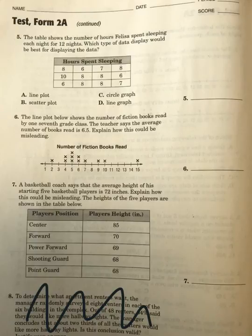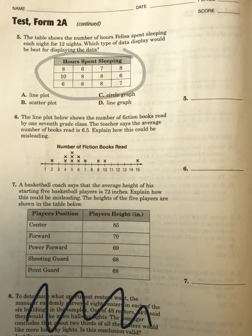The table shows the number of hours Felicia spends sleeping each night for 12 nights. Which type of data display would be best for displaying the data? So what we have, our data right here, looks like we would like to use a line plot as the best one.